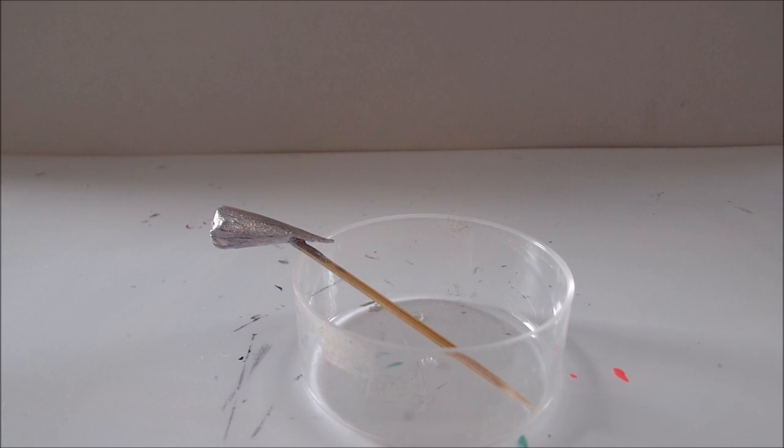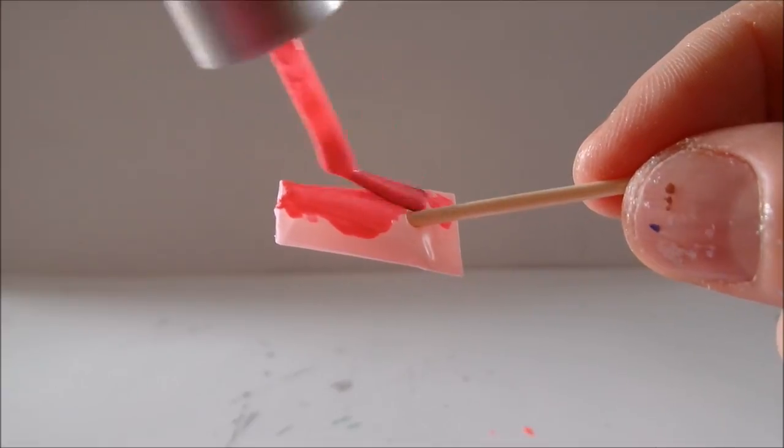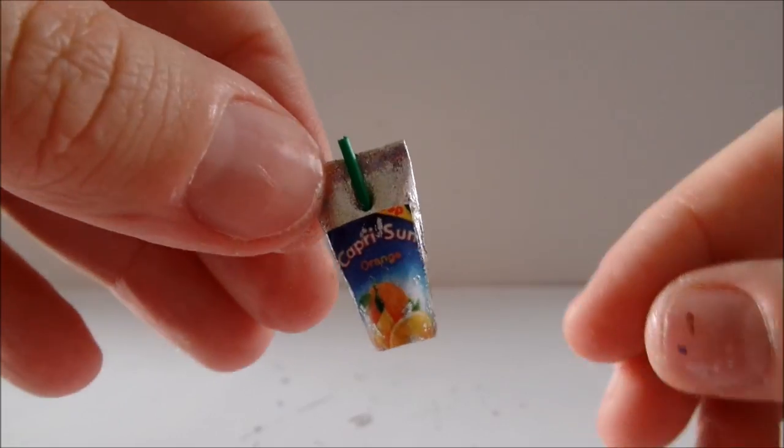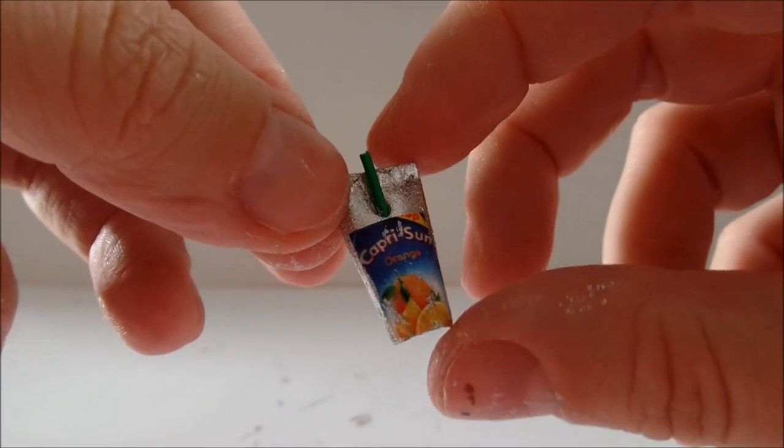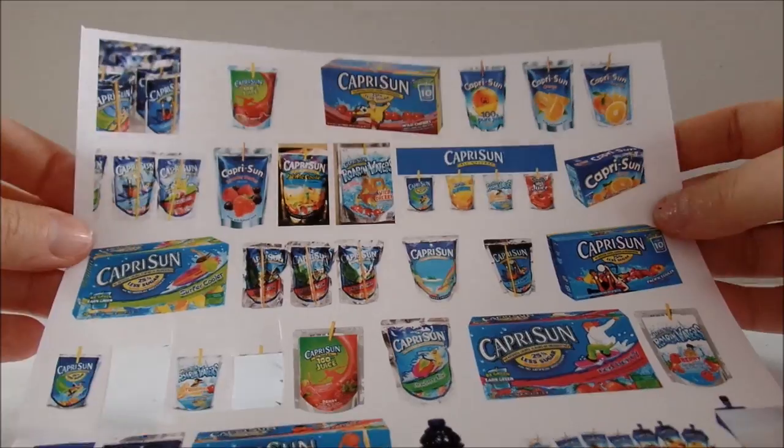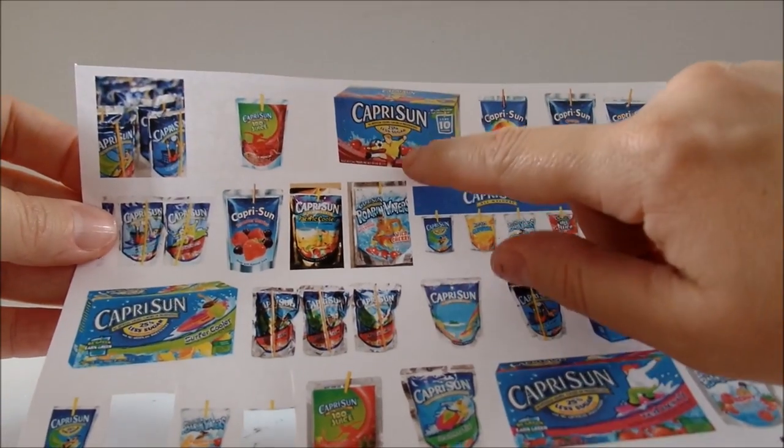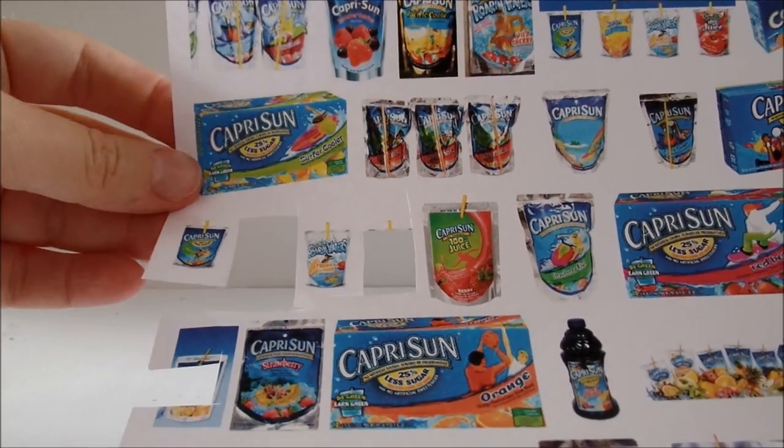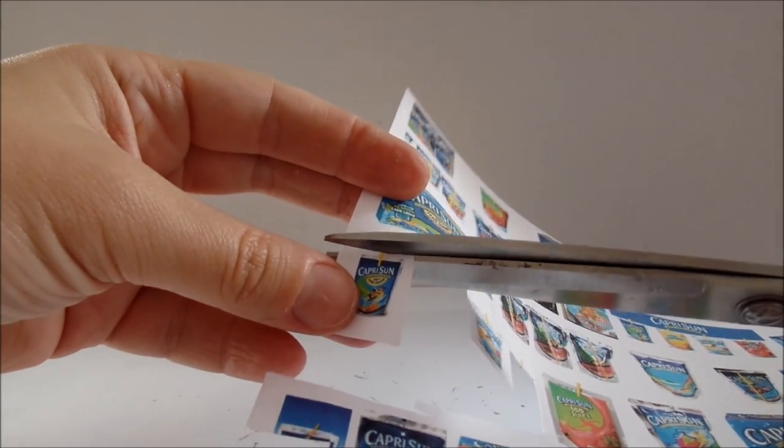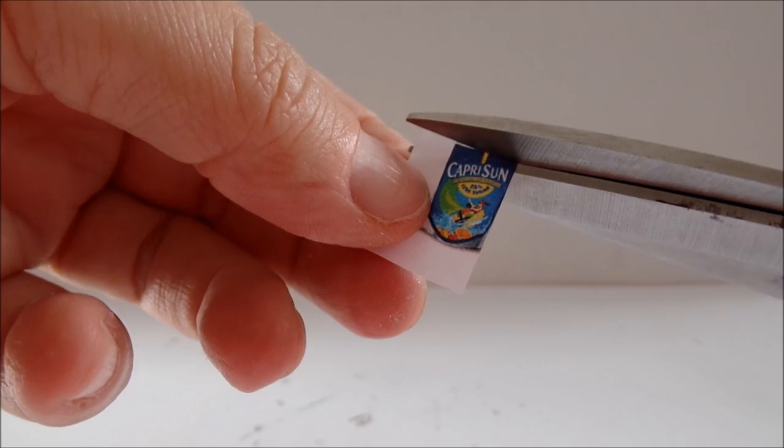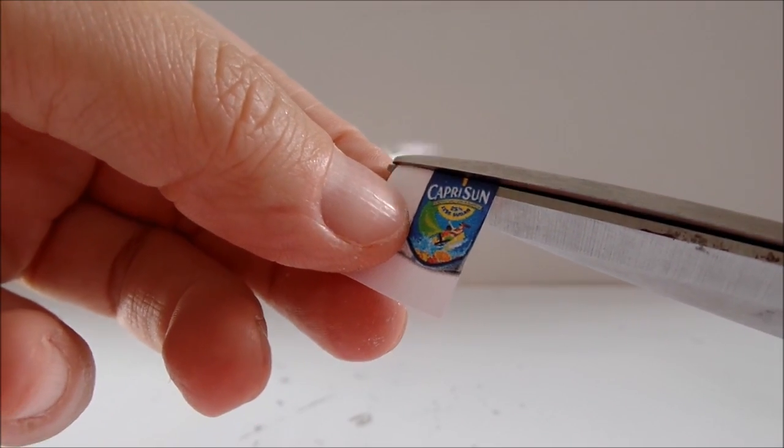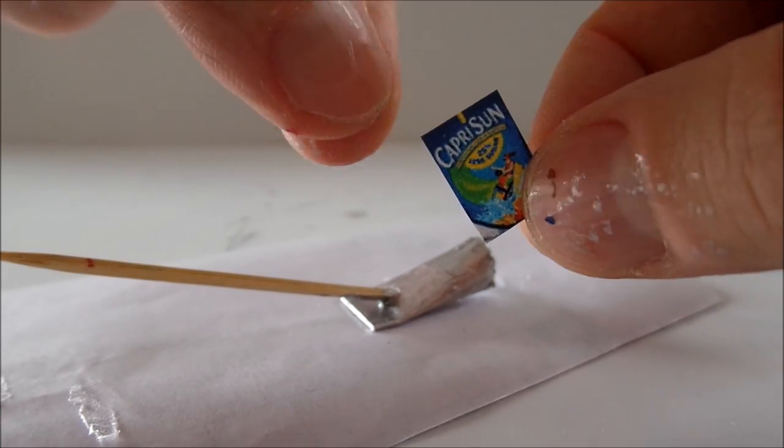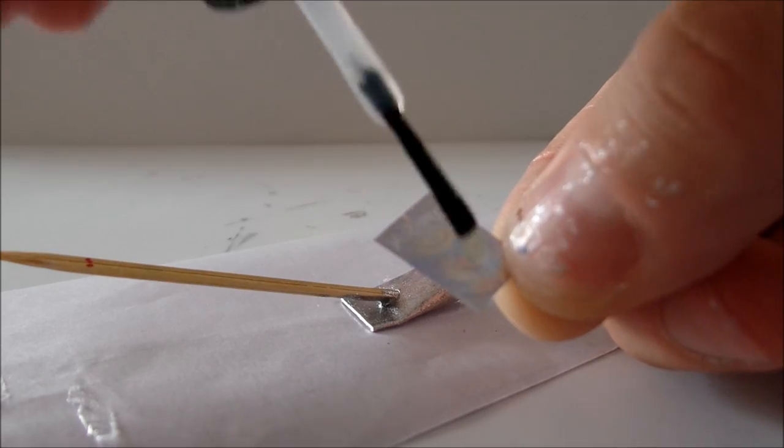Allow to dry. If you want to label your drink pouch you can write Capri Sun in Google images and print out these pictures. Cut out a small piece. I took this tiny piece of paper and cover it with transparent nail polish.